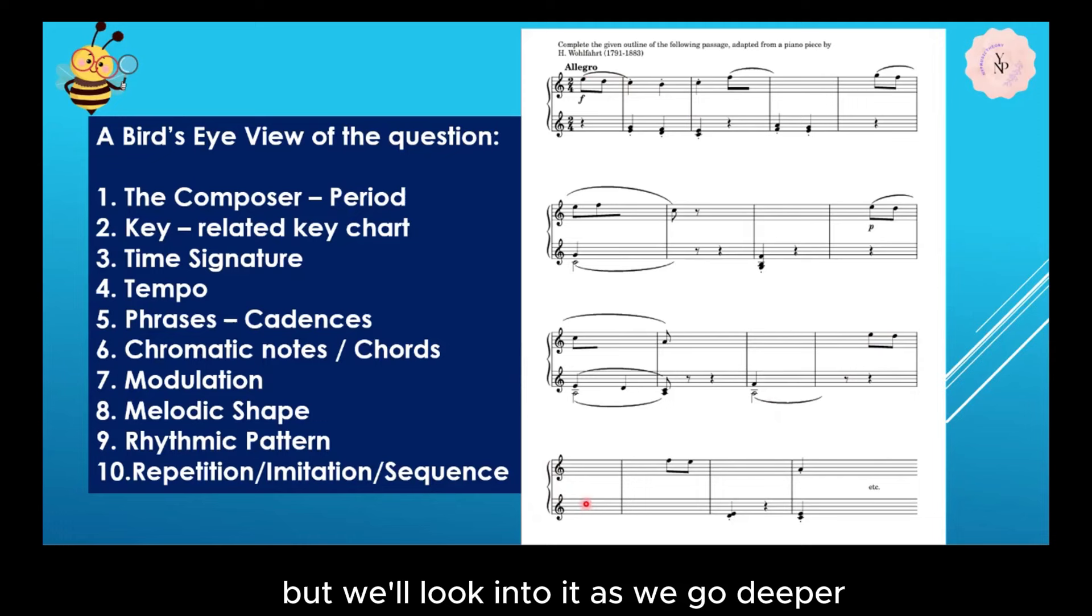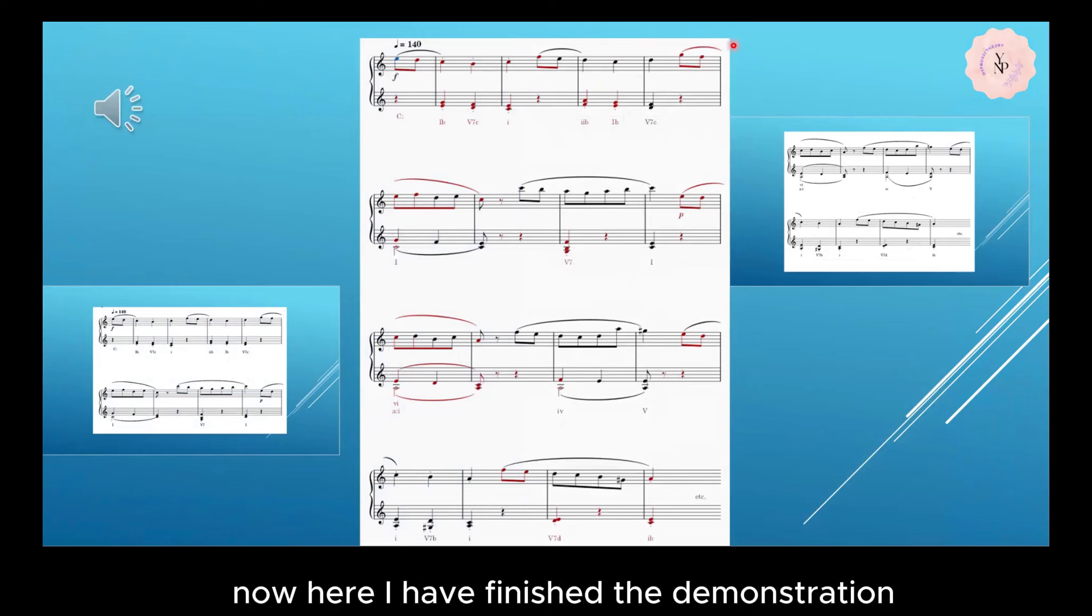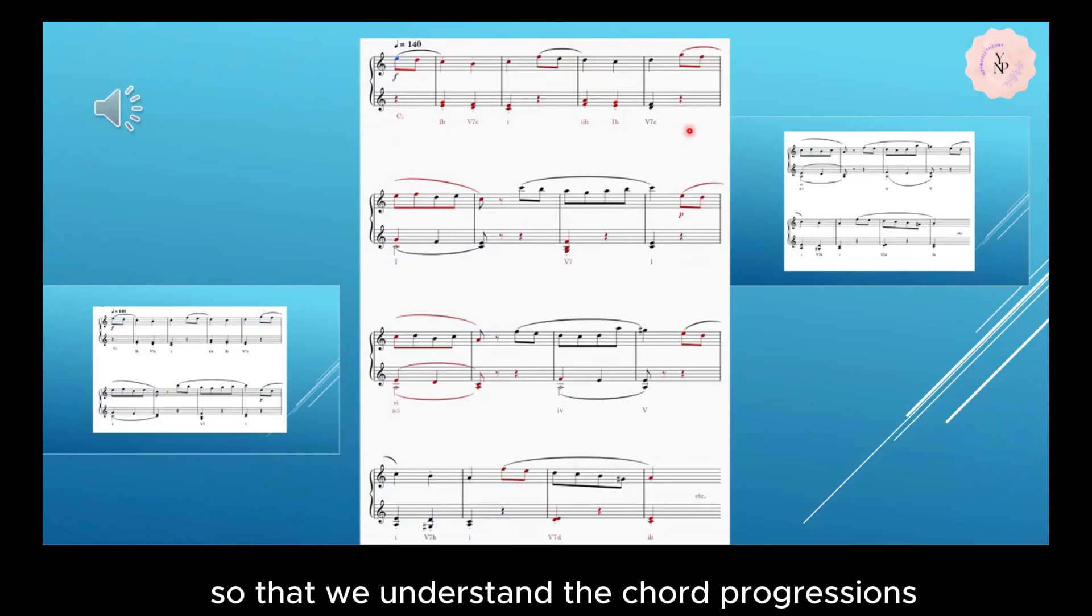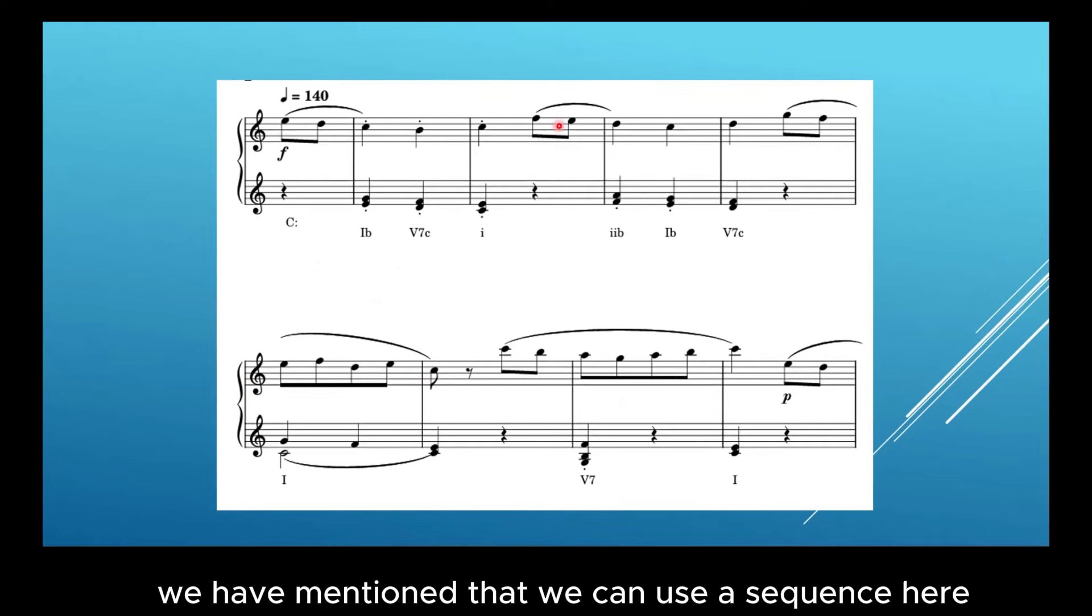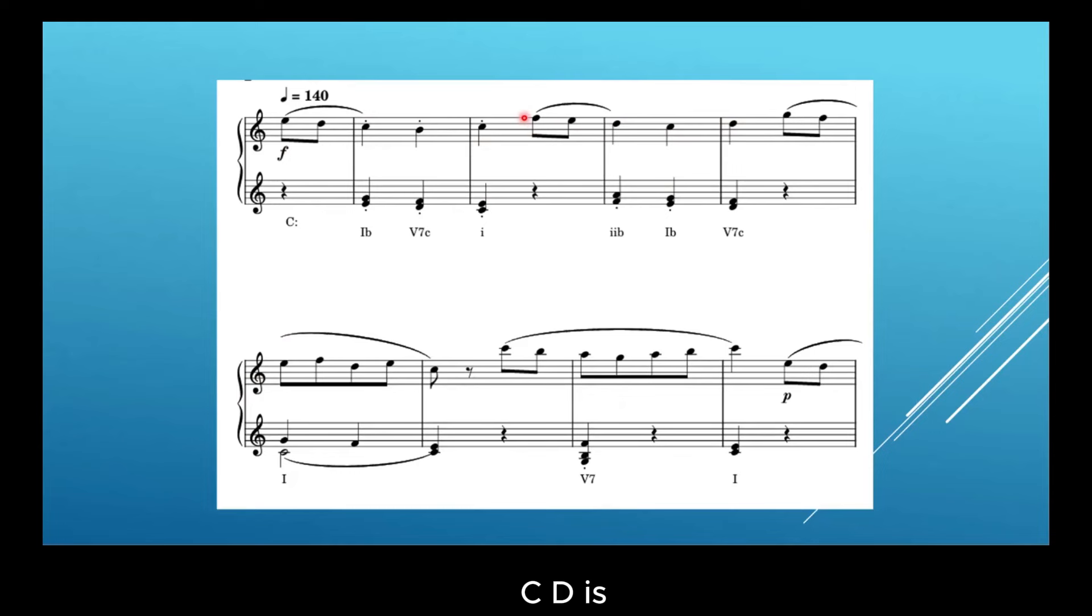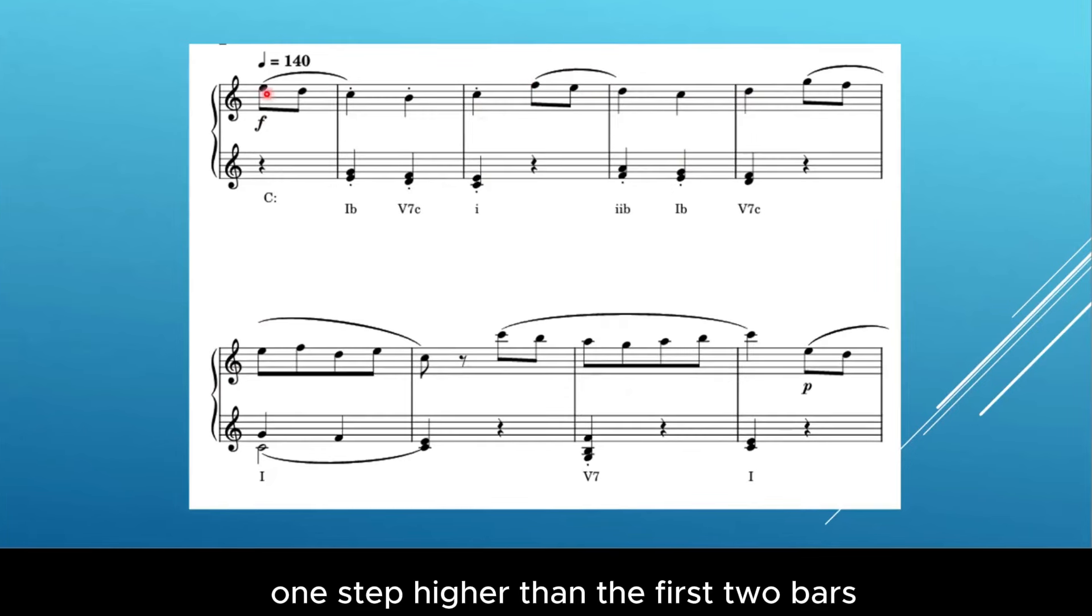Now here I have finished the demonstration and I have dropped down the Roman numerals so that we understand the chord progressions. Let's look at the first two lines. We have mentioned that we can use a sequence here. So F E D C D is one step higher than the first two bars, same as the left hand. If I analyze it, it's one B, five-seven C, and one, then go to two B, one B, and five-seven C. This looks like not a complete sentence, so there may be a continuation of this five C to one in the next line.